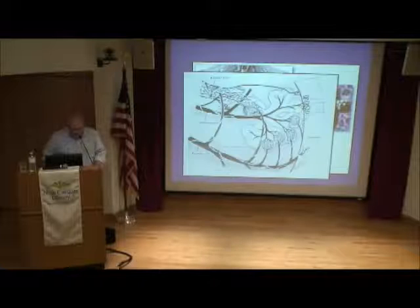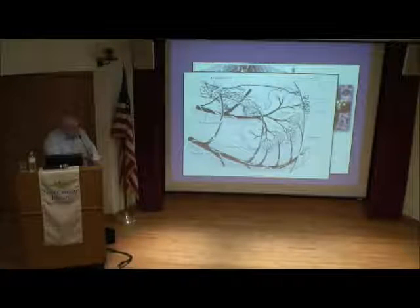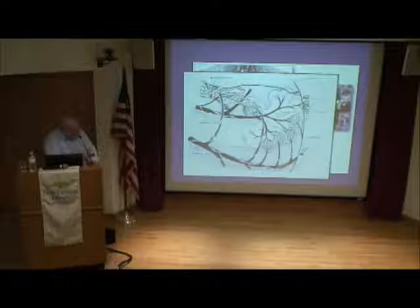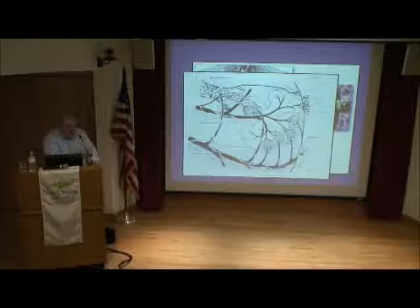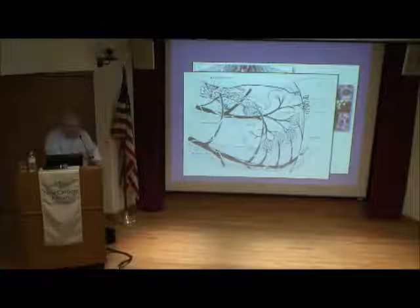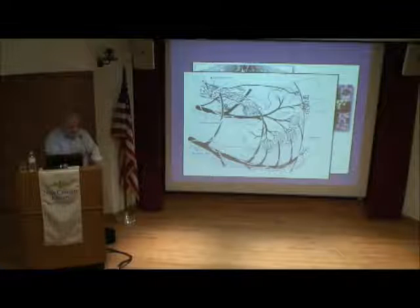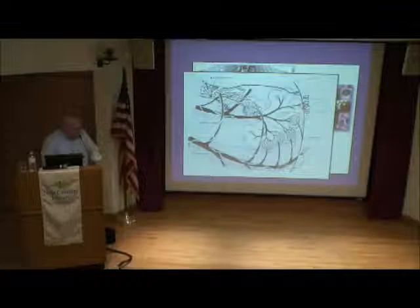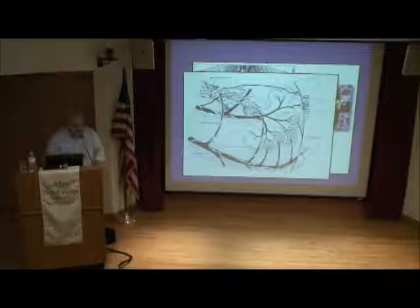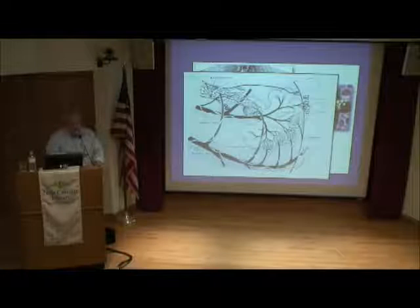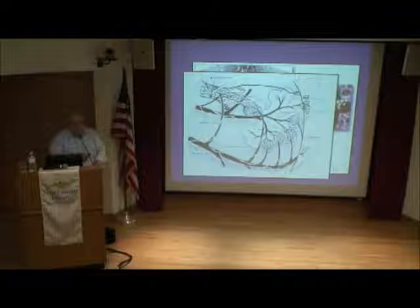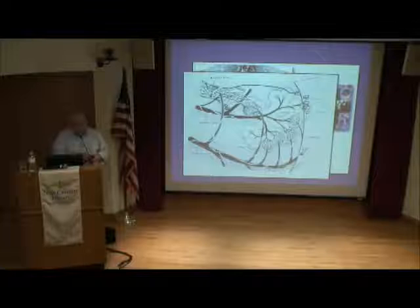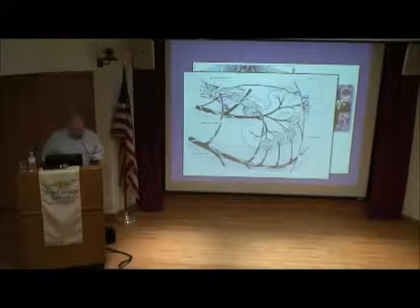Moving from anatomy to a cellular level: blood comes in on the pulmonary arteries, crosses the alveoli where gas is exchanged, then returns through pulmonary veins to the heart. Unlike the rest of the body where arteries carry oxygenated blood and veins carry deoxygenated blood, the lungs are the opposite—pulmonary veins carry oxygenated blood because they've already passed through the lungs.